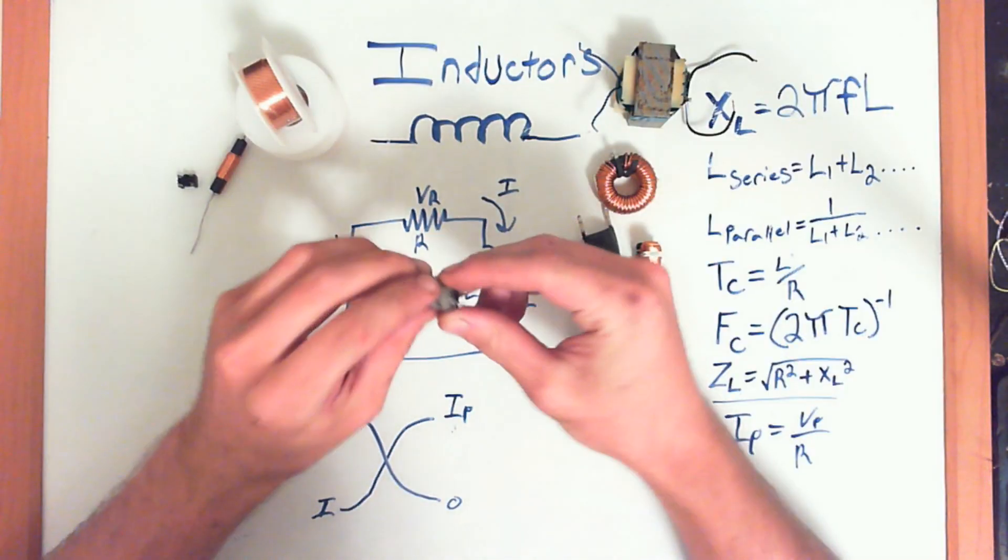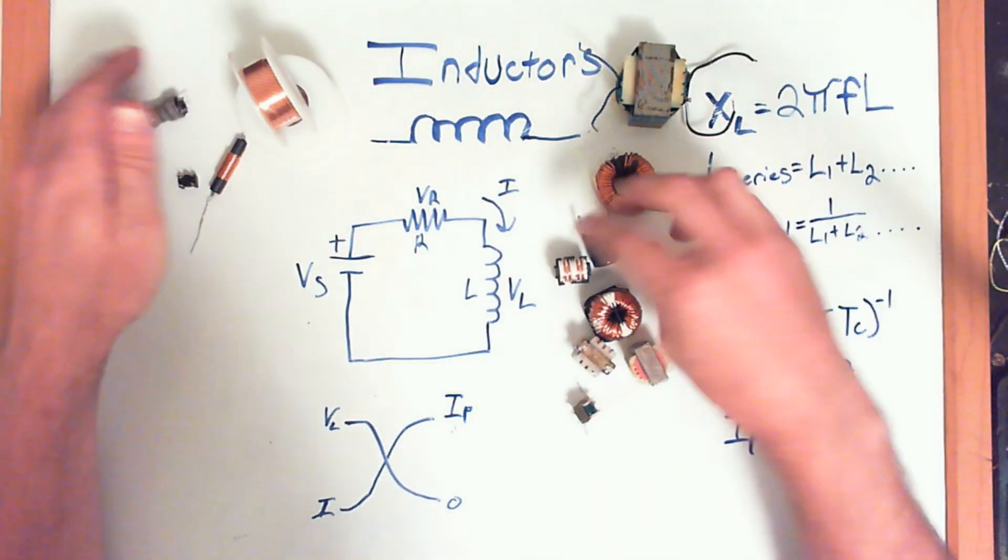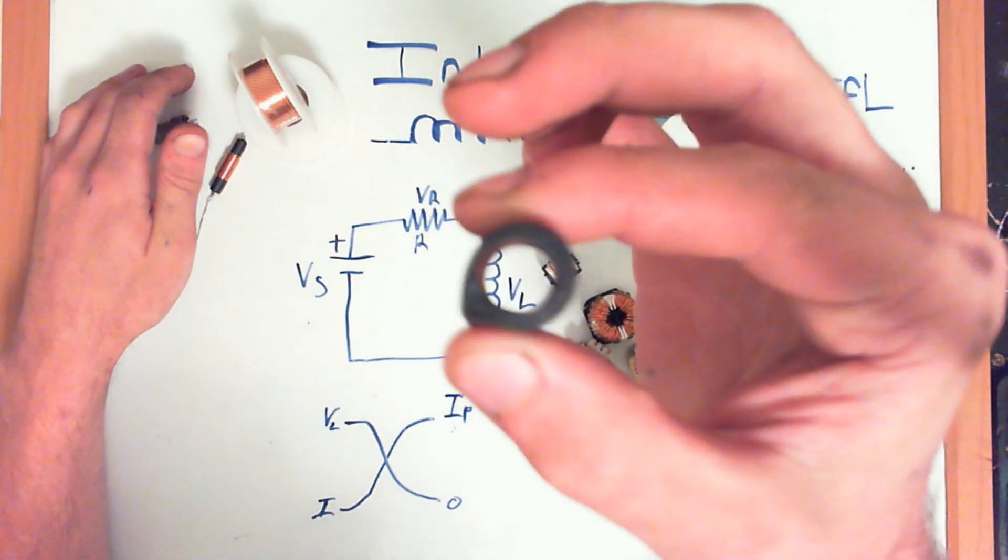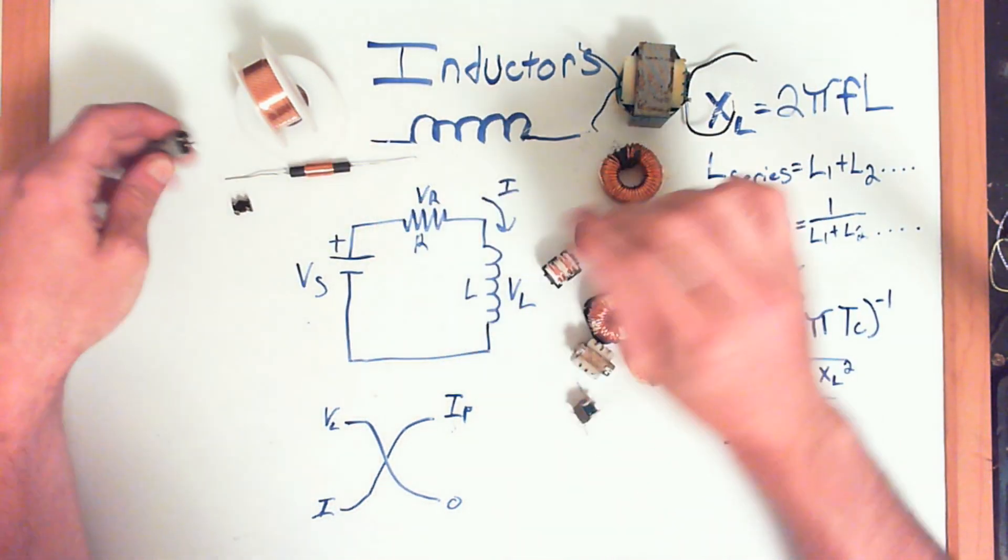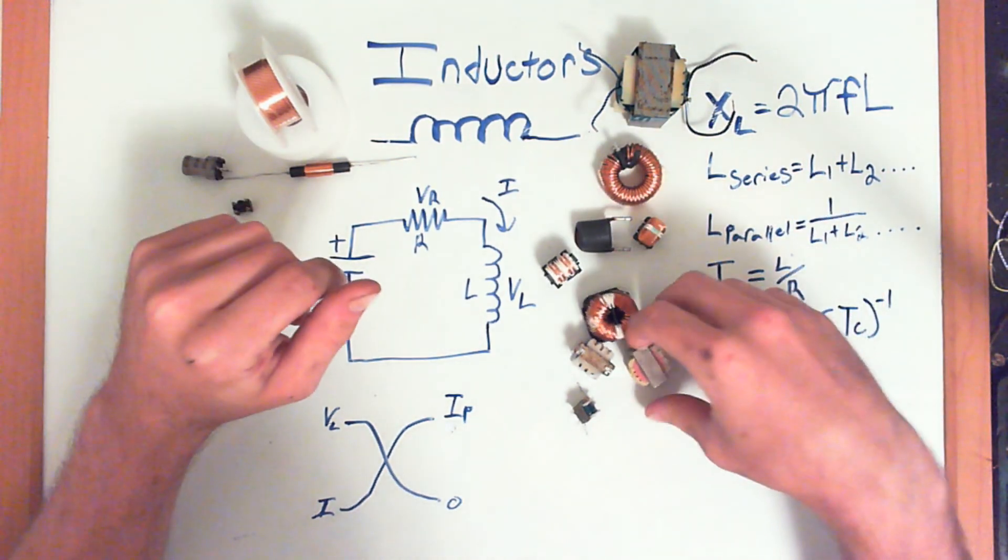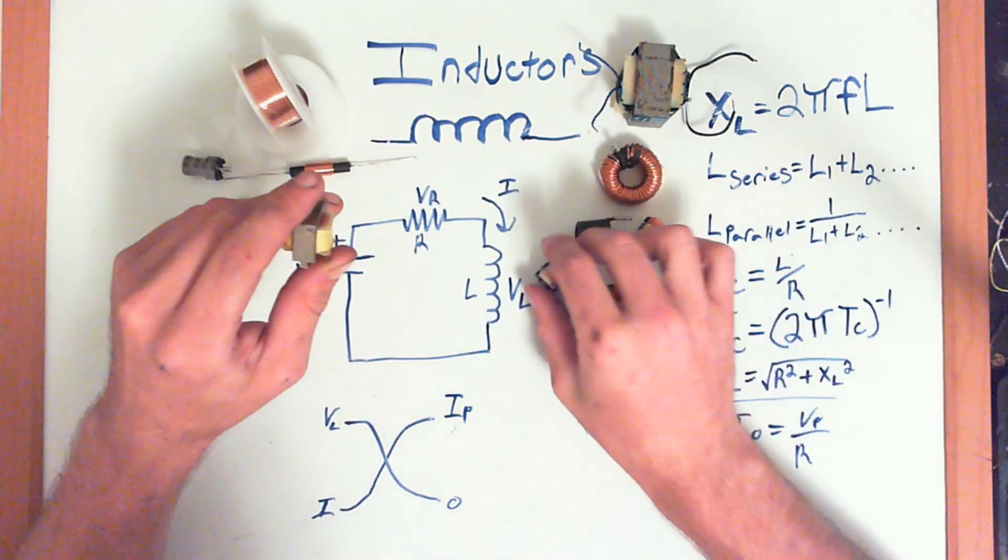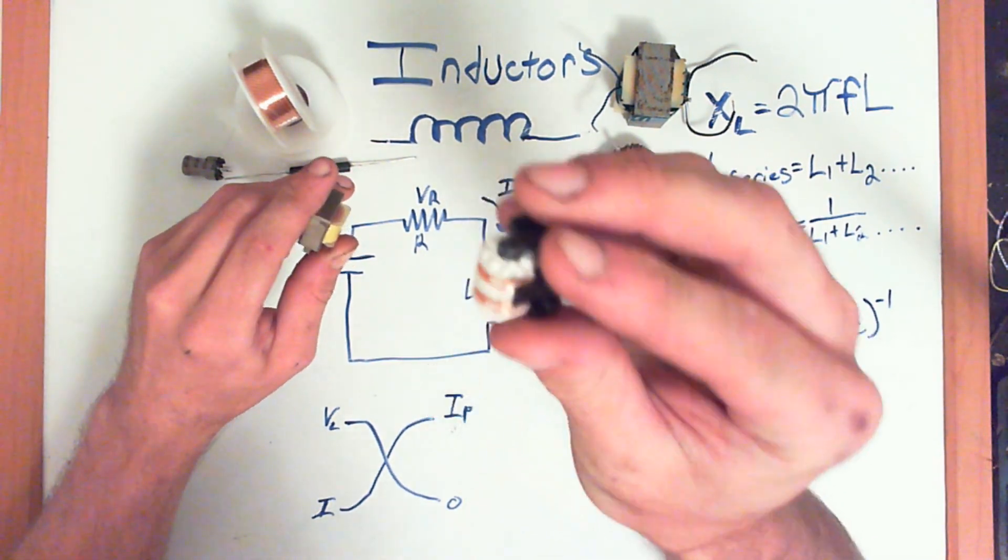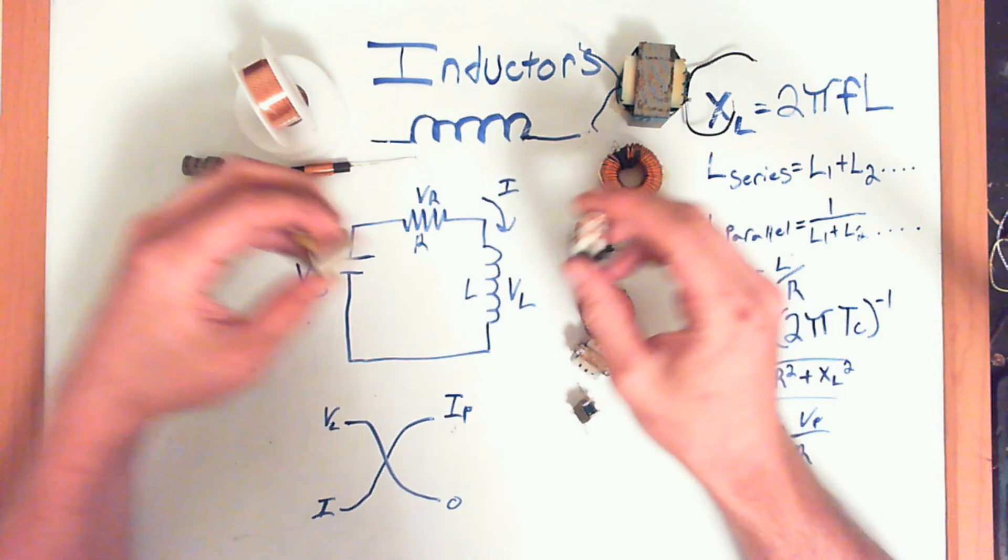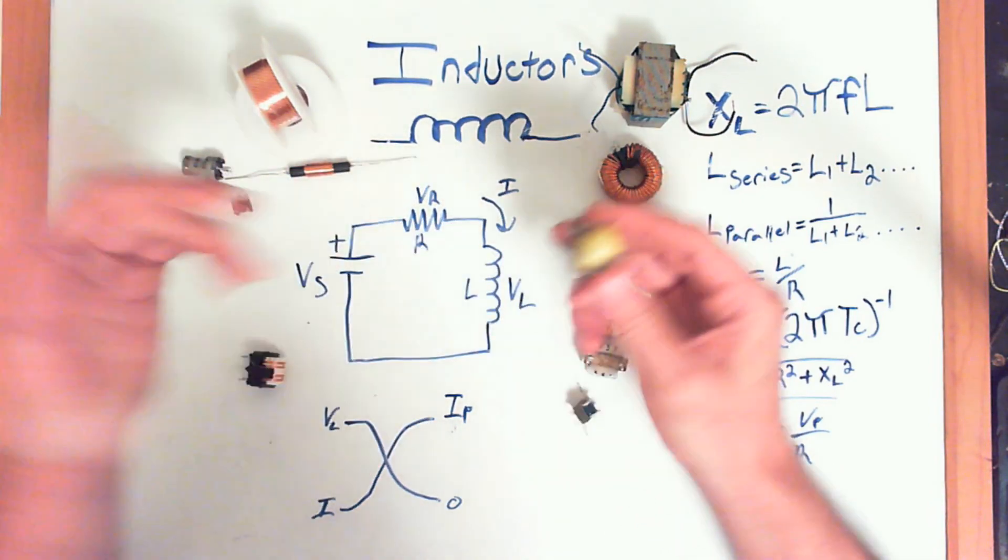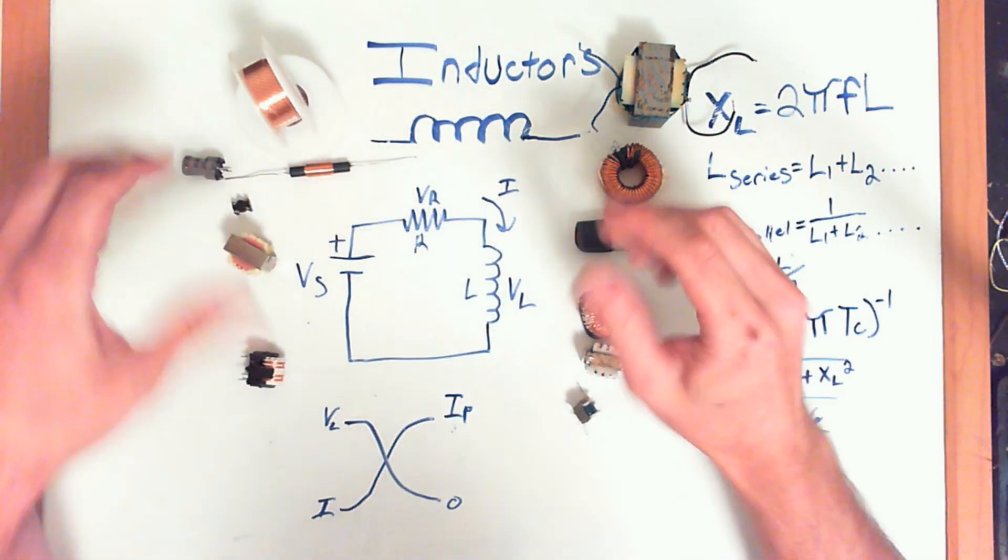Some of them have air cores, for instance that one. Some of them have iron cores, some of them have ferrite cores, some of them come in different kinds of plastic and iron cores. There's a bunch of different ways that inductors are constructed.